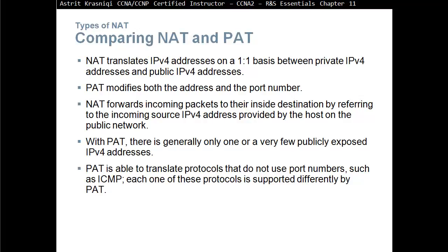Comparing NAT with PAT: NAT translates IPv4 addresses on a one-to-one basis between private and public IPv4 addresses — first-come-first-served. PAT modifies both the source address and the source port number. With NAT, incoming packets are forwarded by referring to the incoming source IPv4 address from the public network host. With PAT, there is generally only one or a few publicly exposed IPv4 addresses. PAT is also able to translate protocols that do not use port numbers, such as ICMP, though each protocol is supported differently.